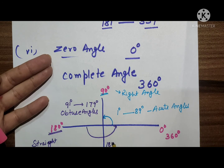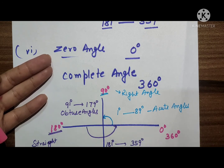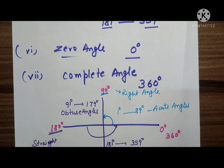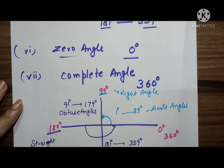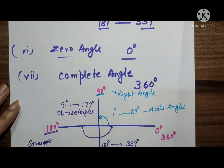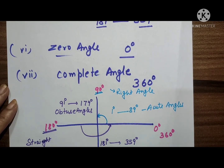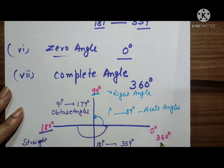Angles from 181 degrees to 359 degrees are all reflex angles. Students often have confusion with reflex angles — from 181 degrees to 359 degrees, any angle or digit in between is called a reflex angle.